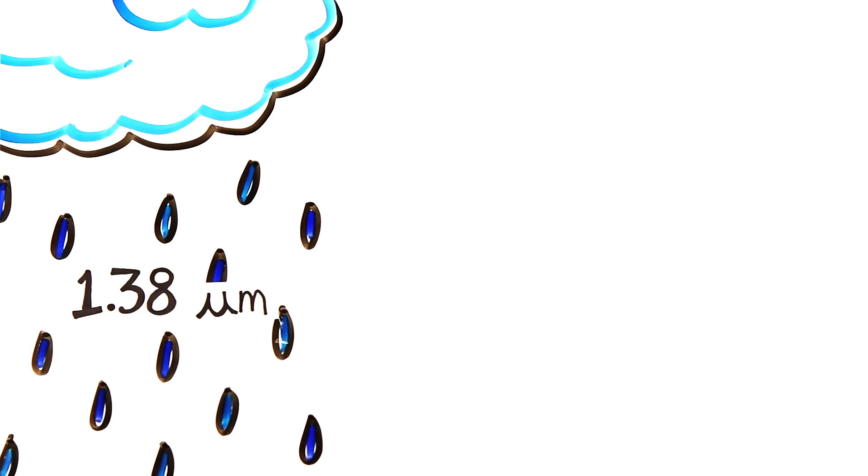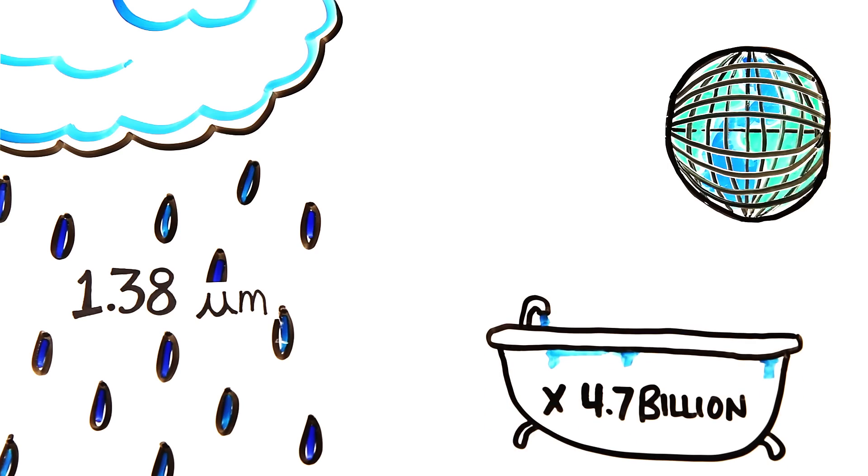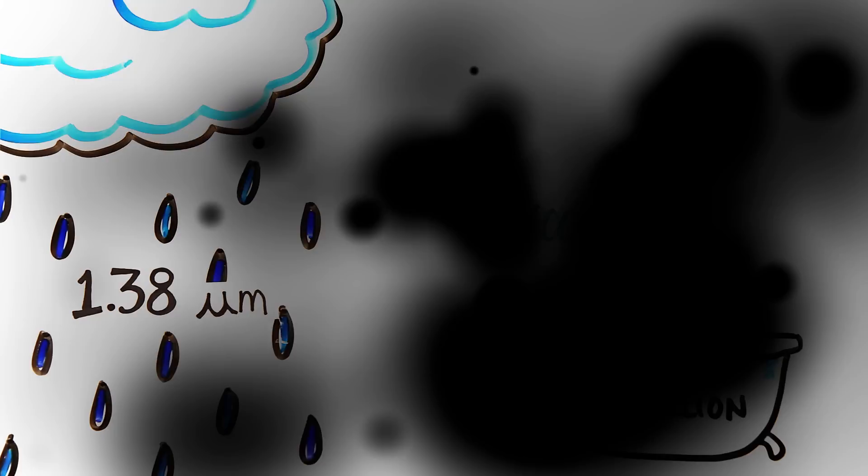An average of 1.38 micrometers of rainfall around the world, which is 4.7 billion bathtubs of water every minute. And with the storms comes approximately 6,000 bolts of cloud-to-ground lightning hitting the Earth.